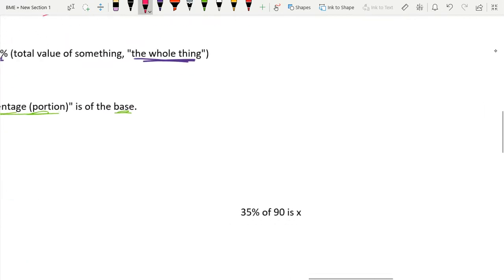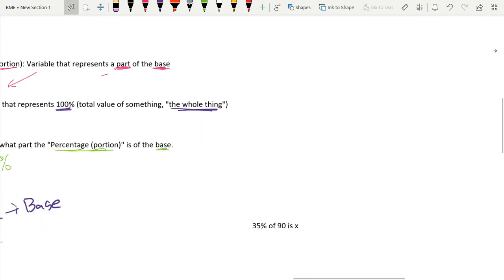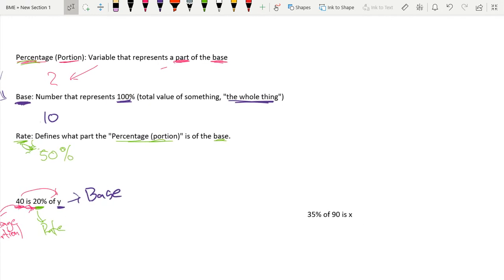Now our next question here is 35% of 90 is X. So we're just identifying our base, our rate, and our percentage. So if 35% of 90 is X, let's identify the base first. That's always a good way to go. This would mean that our whole is 90 because we're taking 35% of 90, so this is our base. And 35% is our rate. A big clue for rate is just if there's a percentage, it's almost always going to be the rate. And lastly, our percentage or portion is X because X is 35% of our base 90.